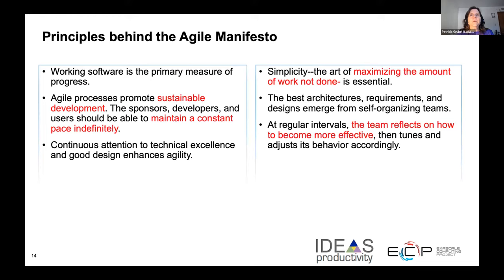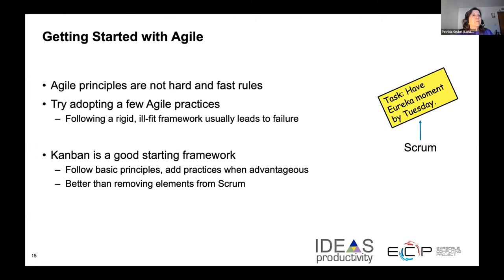The remaining principles include important ideas such as having processes that promote sustainable development, maintaining a constant pace for stakeholders and developers, and reflection on becoming more effective. Read through all 12 principles to get a deeper understanding. The principles are not meant to be hard and fast rules, but guides. Pick a practice or a few practices to try and use the ones that work for your team. It may be easier to get started with basic principles of Kanban and add practices incrementally.